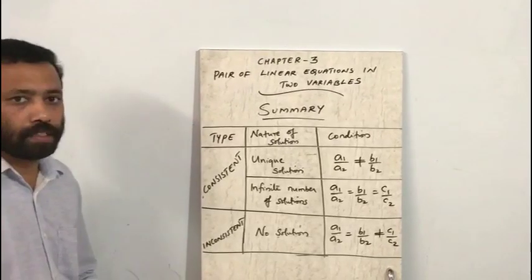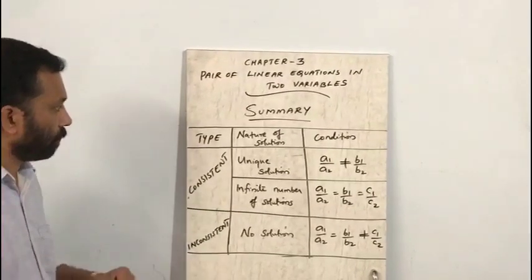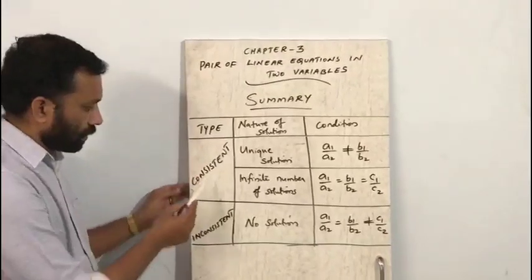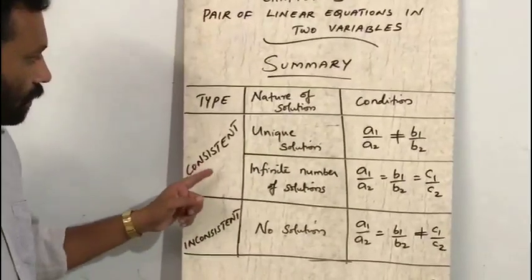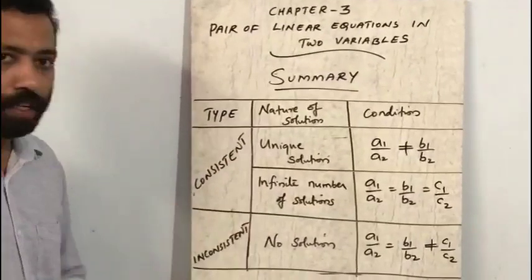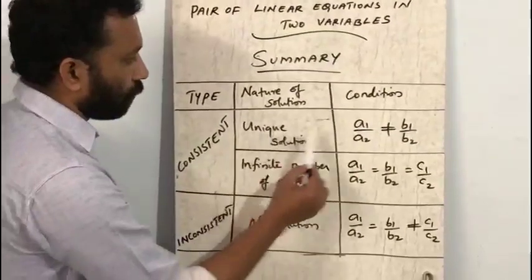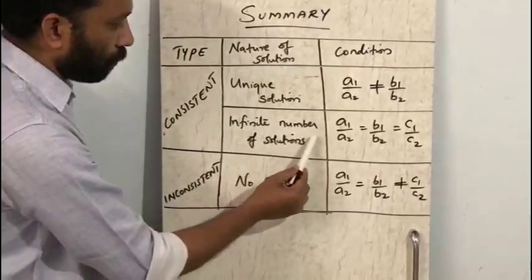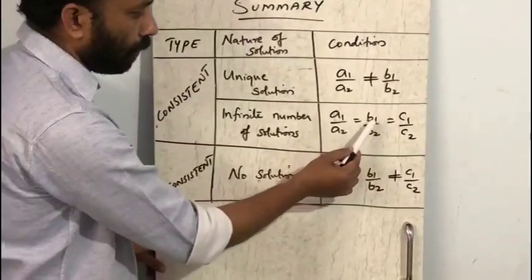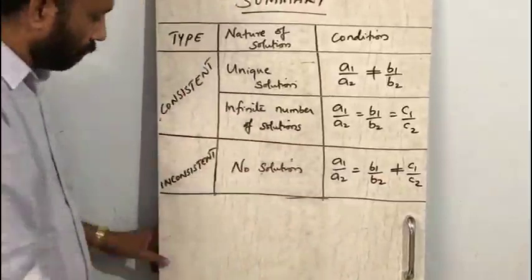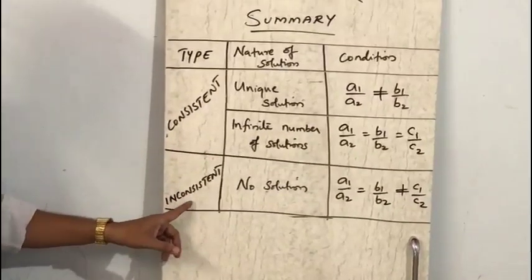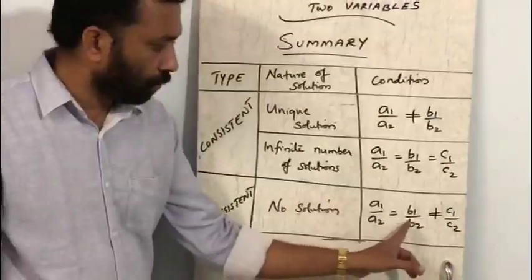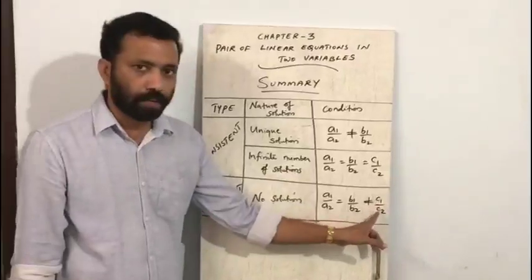Let us summarize. There are two types of systems: consistent and inconsistent. Consistent includes unique solution — condition: a1/a2 ≠ b1/b2 — and infinite number of solutions — condition: a1/a2 equals b1/b2 equals c1/c2. Inconsistent means no solution — condition: a1/a2 equals b1/b2, not equal to c1/c2.